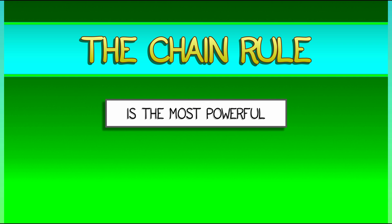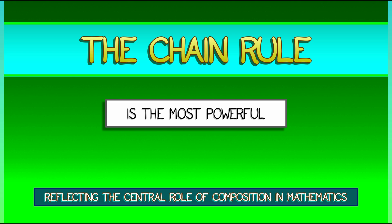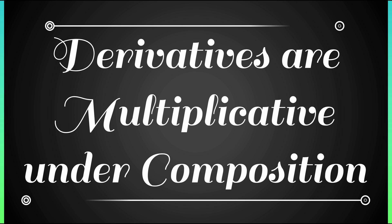Of all the differentiation rules, the chain rule is perhaps the most powerful, because composition is so powerful in mathematics. Recall the chain rule, which says that derivatives are multiplicative under composition.